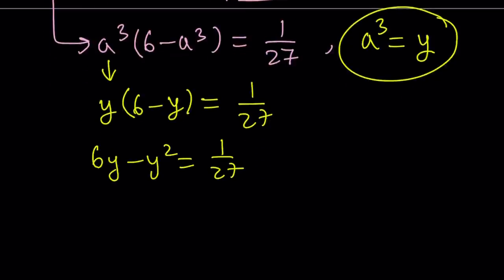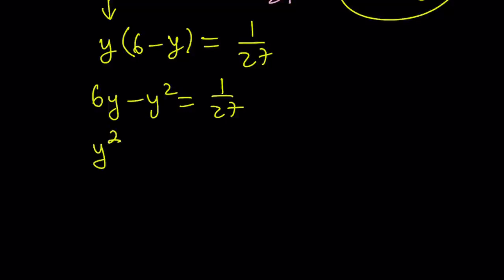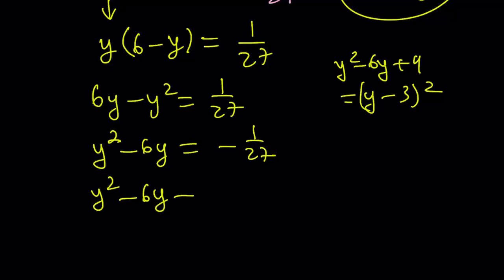I'm going to replace a cubed with y. So, it's going to be y times 6 minus y equals 1 over 27. And, then, if you distribute, you get 6y minus y squared equals 1 over 27. I would like to multiply both sides by negative 1, so that I can get a positive y squared. Now, my goal is to complete the square. As you should know, y squared minus 6y plus 9 is y minus 3 quantity squared. So, if I can add 9 to both sides, then I get a perfect square. And, this becomes a negative 1 over 27 plus 9, which can then be written as 9 times 27 minus 1 divided by 27. And, that is going to equal 242 divided by 27.